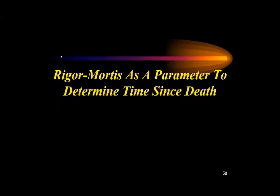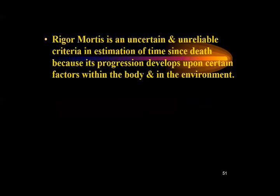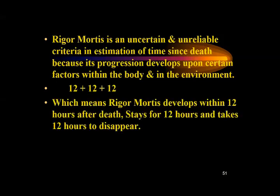Rigor mortis can be used to calculate time since death because it is time-dependent. However, rigor mortis is an uncertain or unreliable criterion for estimation of time since death because its progression depends on certain factors within the body and the environment. In normal conditions, rigor mortis follows the rule of 12: it develops within 12 hours after death, stays for 12 hours, and takes 12 hours to disappear.